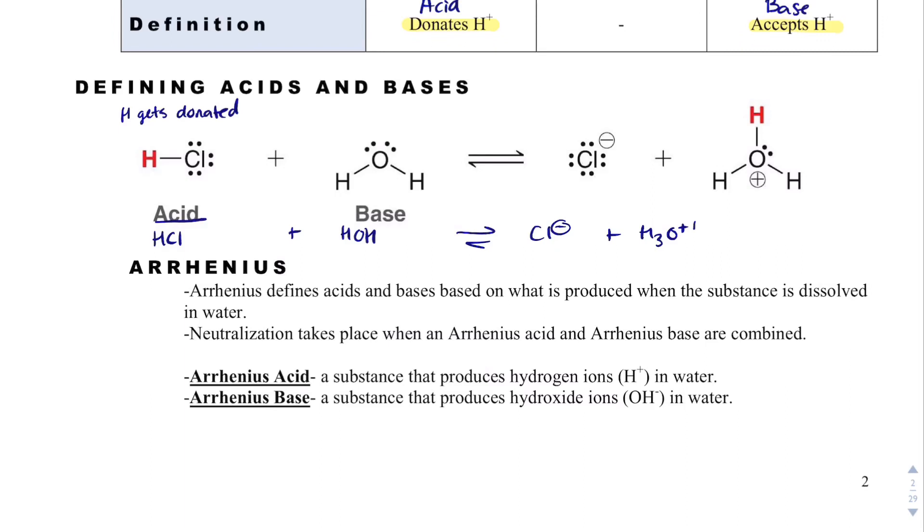And because it gets donated to the base, that makes me know that HCl was the acid. And then this base accepts an H+. And it's really H+, because it was HOH. It adds an H+ to become H3O, but also with the plus.